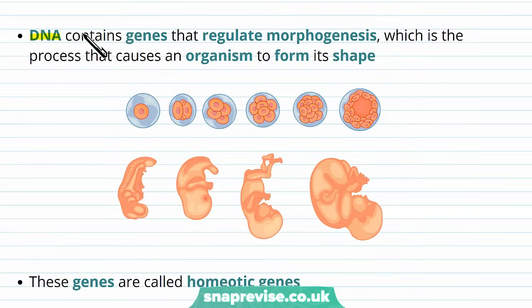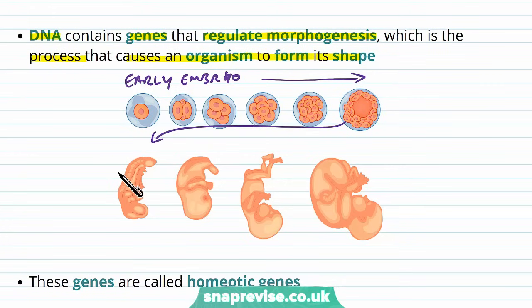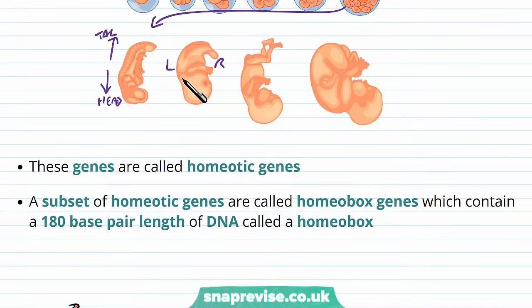The way it does this is that DNA contains genes which regulate morphogenesis. Morphogenesis is the process which causes an organism to form its shape. When we start off as an early embryo, we have a very limited shape — just a ball of cells essentially for a few weeks. But eventually we start developing axes and certain directions in our body. We get a head end and a tail end, a left and a right, and eventually when we're born we've got a fully formed shape. The genes that control this shape design are called homeotic genes.